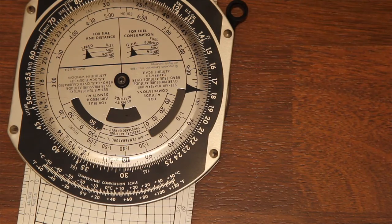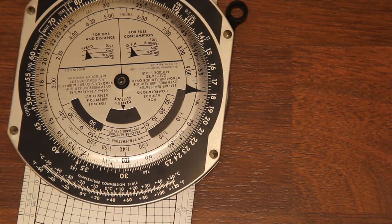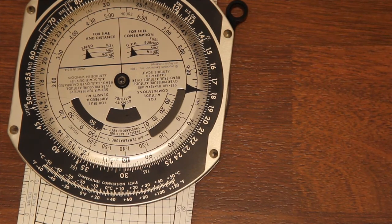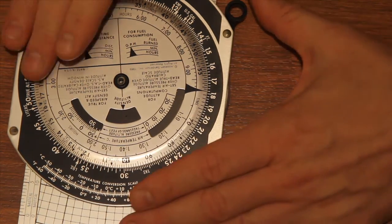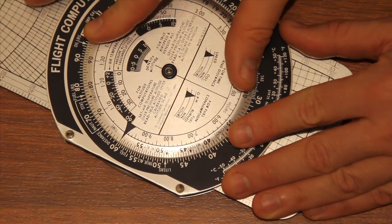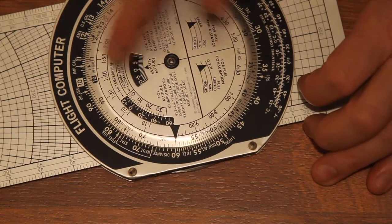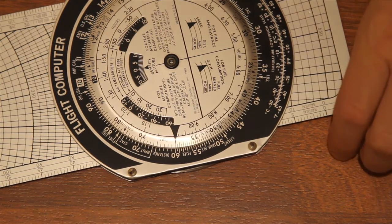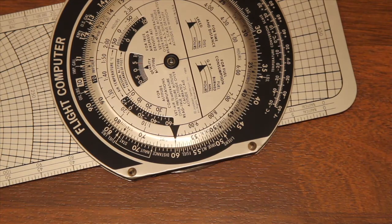So another calculation we'll do is to work out distance. Now distance is speed times time. If we're traveling at 60 kilometers per hour and we travel for a period of 90 minutes, what we do is we take our inner circle and put the arrow on 60 for 60 kilometers an hour, and then we come around to the 90-minute mark and we read that we travel 90 kilometers. That makes sense—if you're traveling at 60 kilometers per hour and you travel for 90 minutes, you're going to travel 90 kilometers.